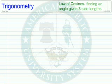In this video, we're going to be using the Law of Cosines in a different way. We're going to use it to find the measure of an angle if we're given three side lengths in a triangle.